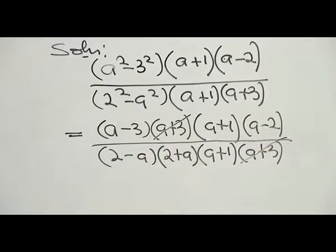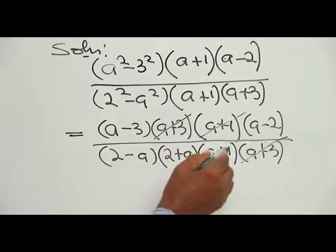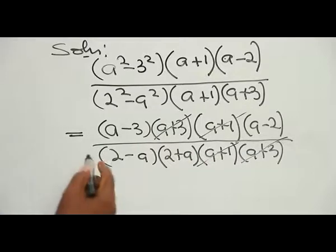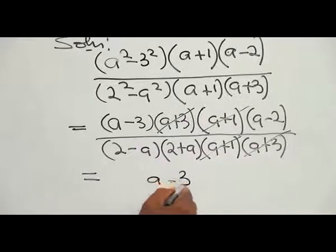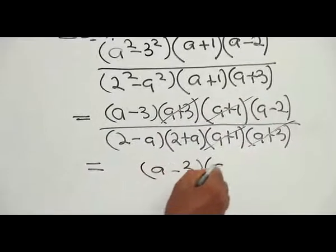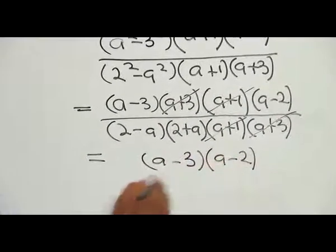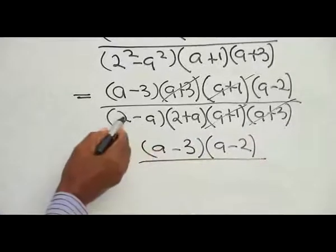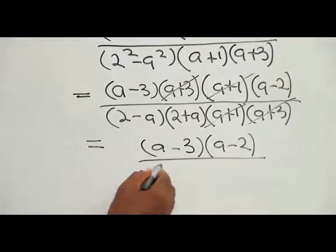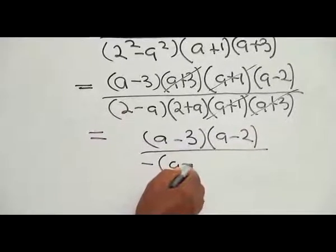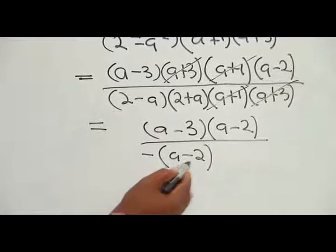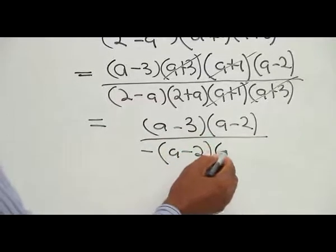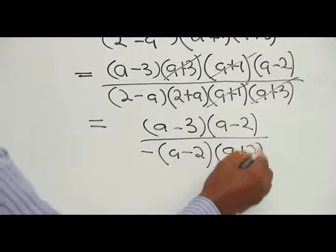For the denominator: 2 squared minus A squared becomes (2 minus A)(2 plus A), and (A squared plus 4A plus 3) becomes (A plus 1)(A plus 3). We now see that A plus 3 and A plus 3 cancel, and A plus 1 and A plus 1 cancel.